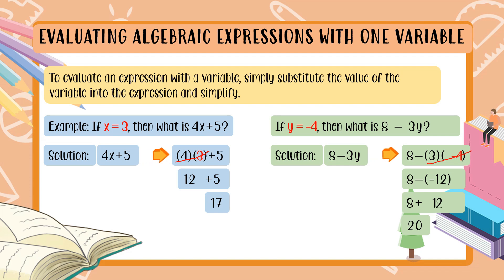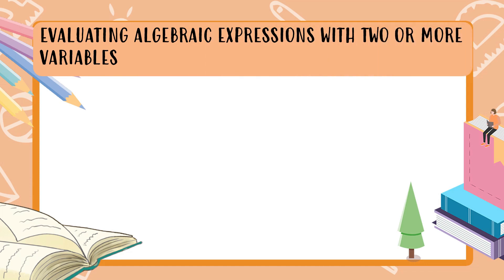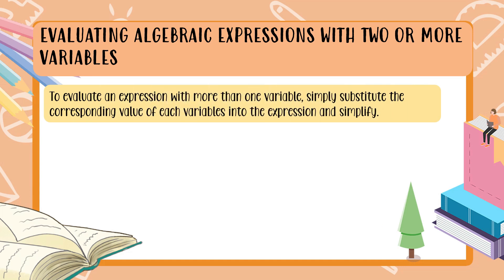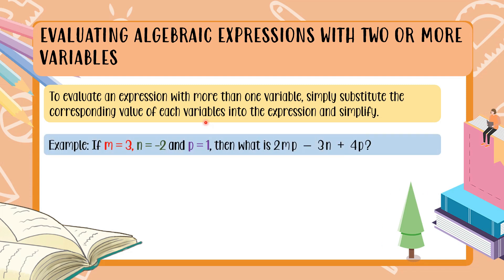That is how you evaluate an algebraic expression with one variable. Now let's level up — what if we have two or more variables to evaluate? If we are evaluating algebraic expressions with two or more variables, we simply substitute the corresponding value of each variable into the expression and simplify. Let's have this example: if m is equal to 3, n is equal to negative 2, and p is equal to 1, then what is 2mp minus 3n plus 4p?